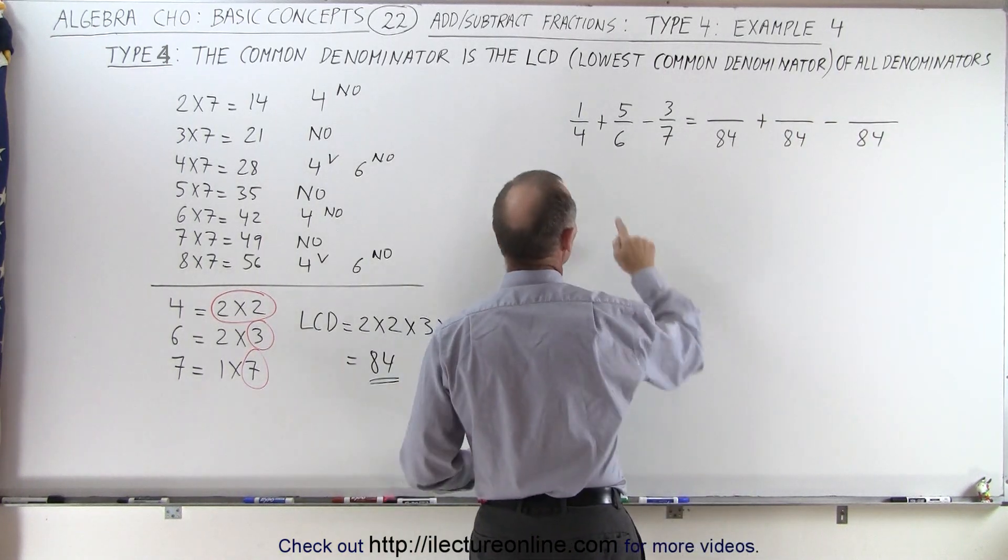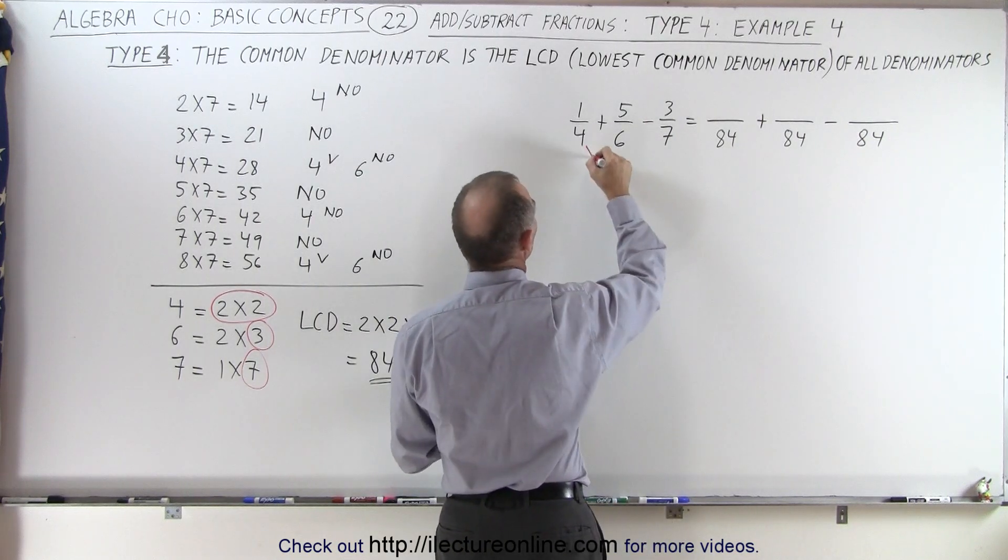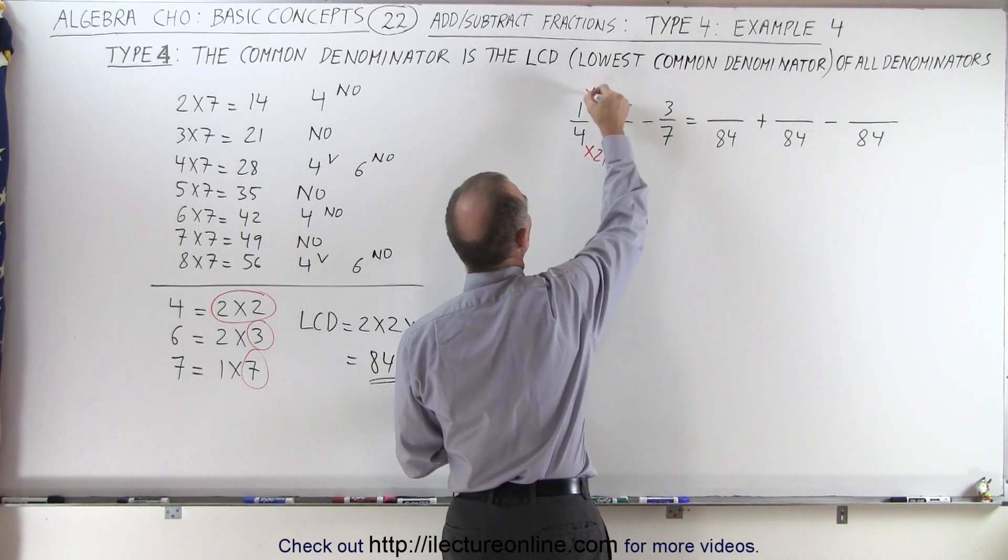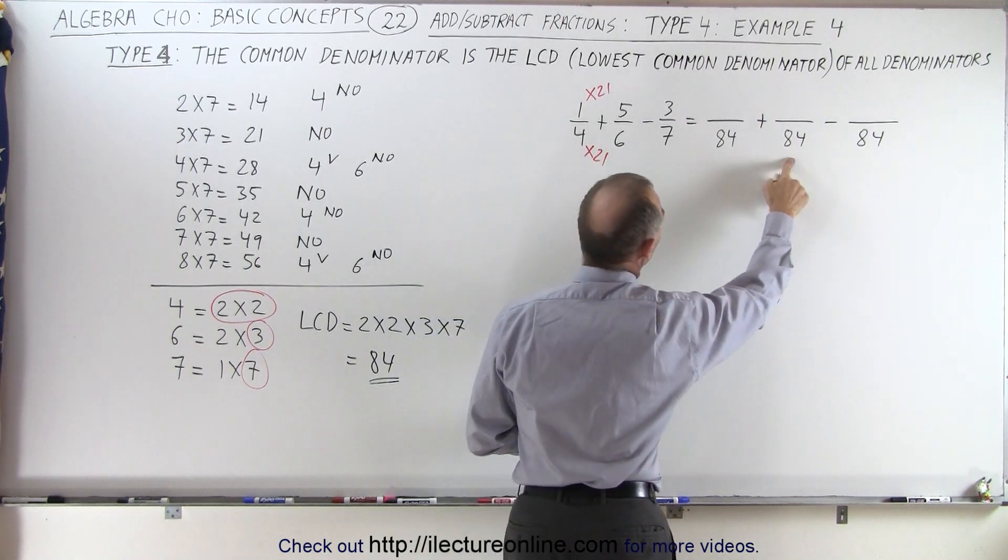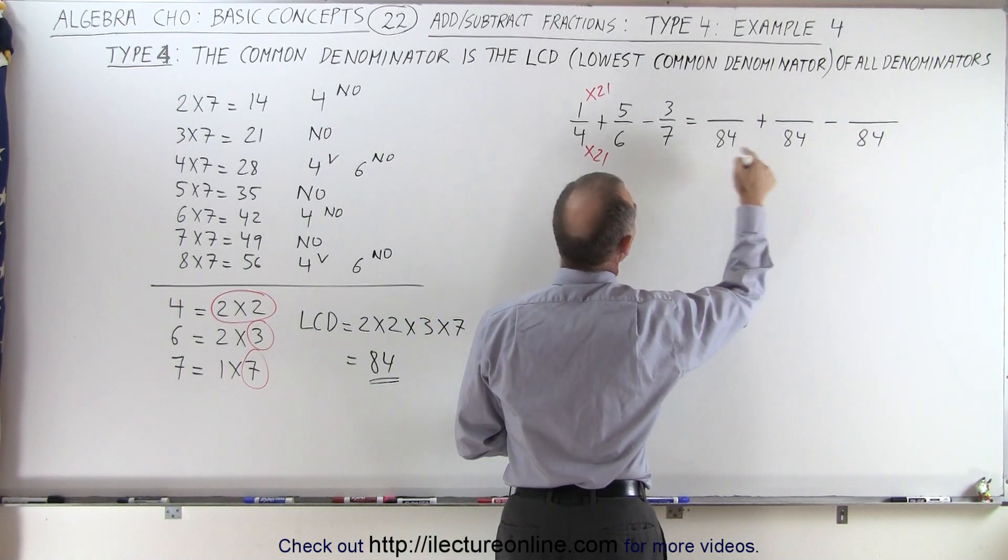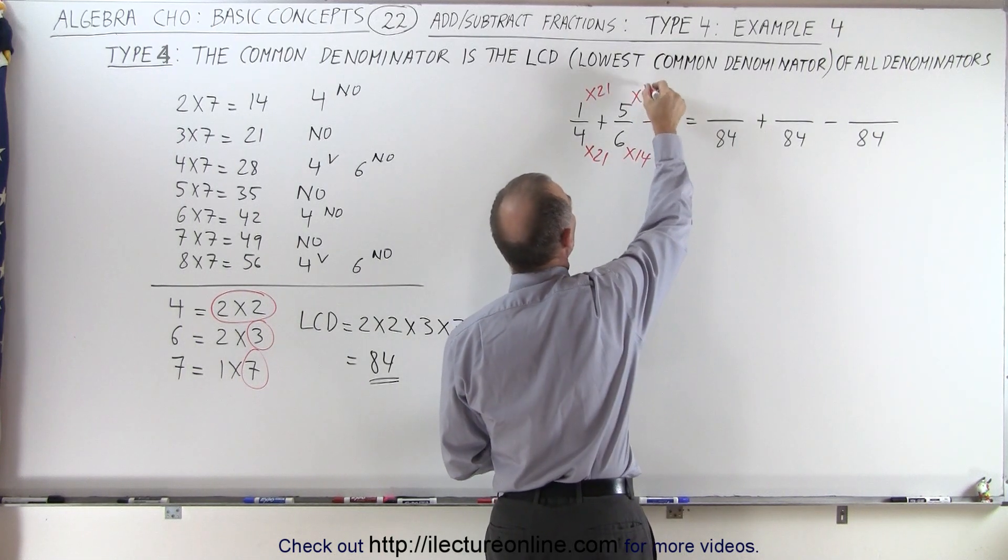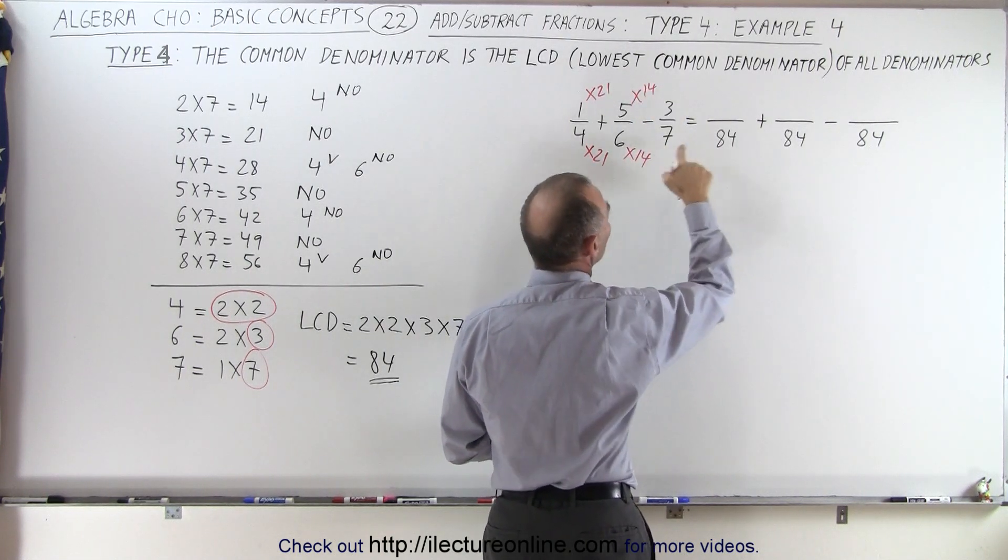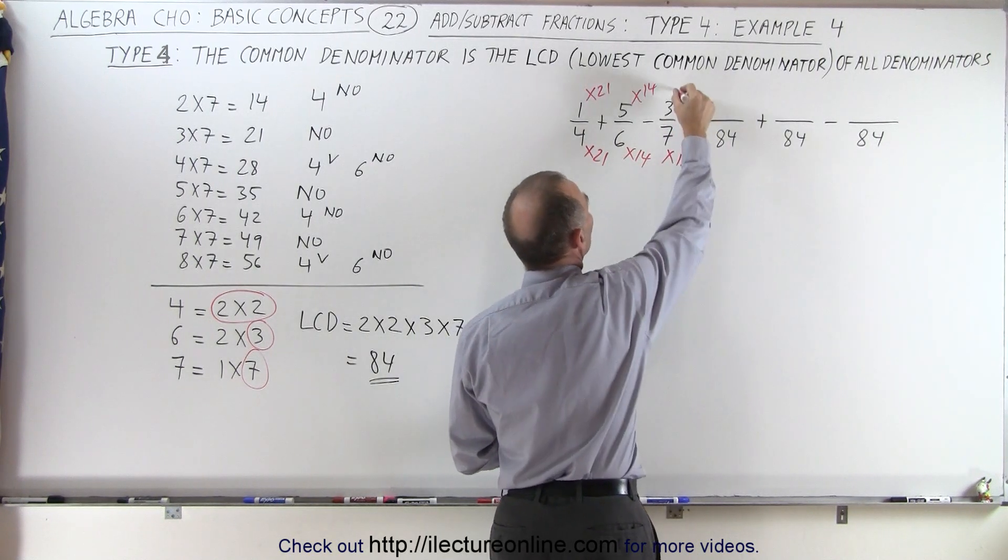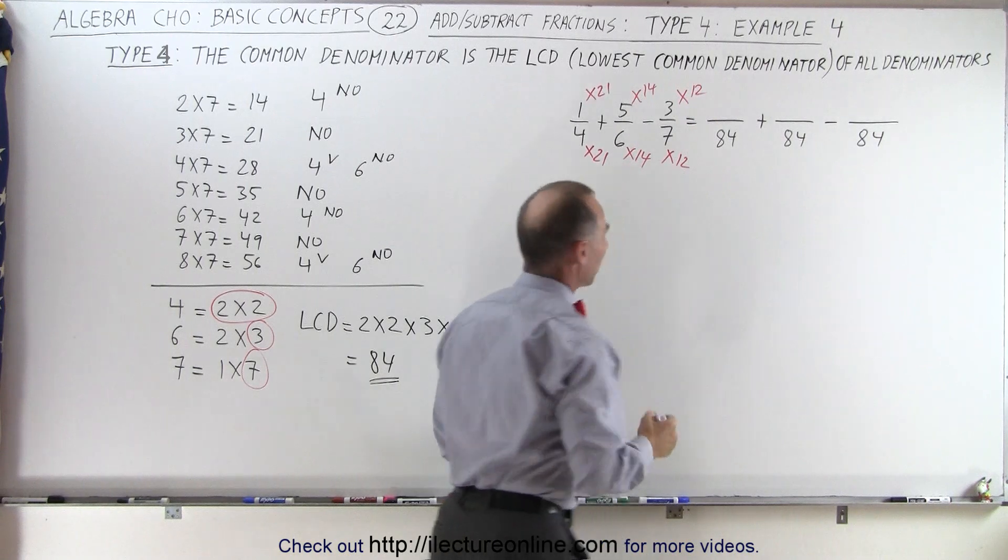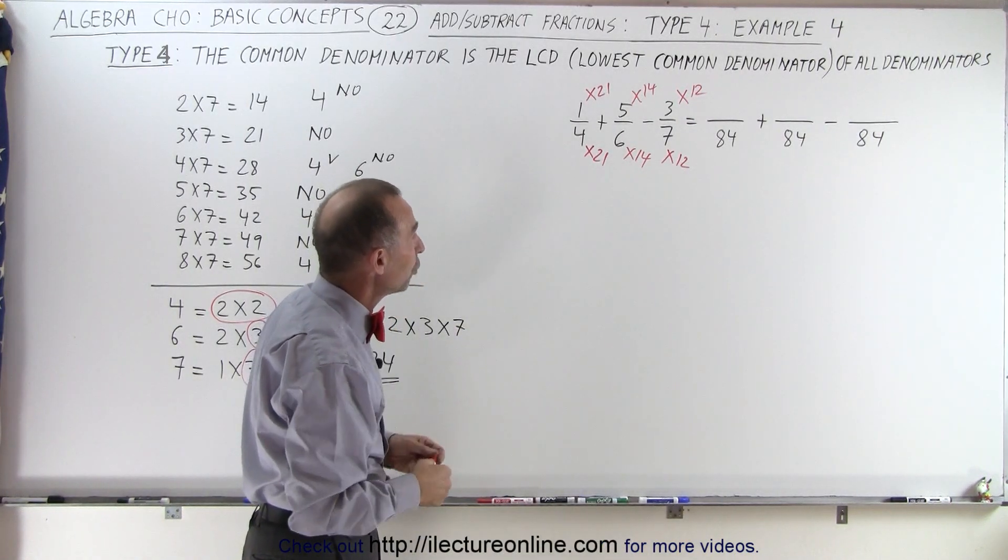And we have to solve the question, what do I have to do to 4 to make it into 84? I have to multiply times 21, which means I have to multiply the numerator times 21 as well. 6 goes into 84, it looks like 14. 6 times 14 is 84, so I have to multiply the numerator by 14. And 7 goes into 84 twelve times, so I have to multiply 7 by 12, which means I have to multiply the numerator by 12 as well.